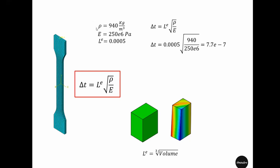This gives us the knowledge that if we artificially increase the density, let's say by 100 times, then the square root of 100 equals 10, meaning the stable time increment will increase by 10 times and your simulation will speed up by 10 times. But be careful: artificially increasing the density might physically change the result and the result might not represent the actual physics.